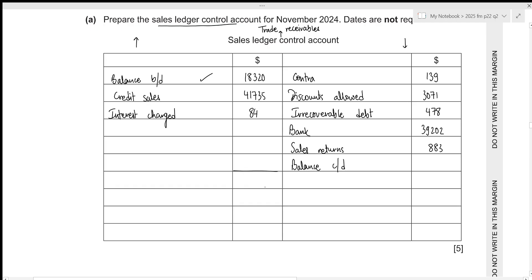For the closing balance, we total the debit side: 18,320 + 41,735 + 84 = 60,139. The closing balance is then 60,139 − 883 − 39,202 − 478 − 3,071 − 139 = 16,366. Always remember to show the closing balance as the opening balance for the next period on the opposite side, so 16,366 appears as the opening balance for the next period. That's all for the first part — let's move on.